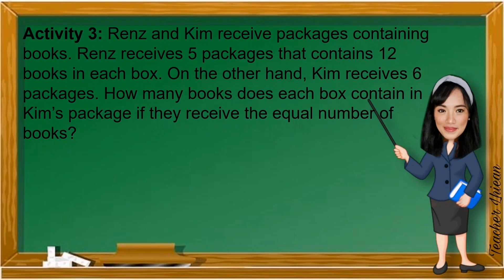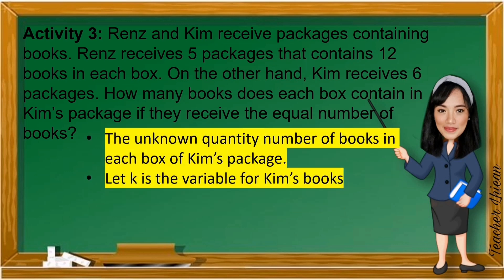Next, let us move to Activity 3. Renz and Kim receive packages containing books. Renz receives 5 packages that contains 12 books in each box. On the other hand, Kim receives 6 packages. How many books does each box contain in Kim's package if they receive the equal number of books? The unknown quantity is the number of books in each box of Kim's package. And let K is the variable for Kim's book.